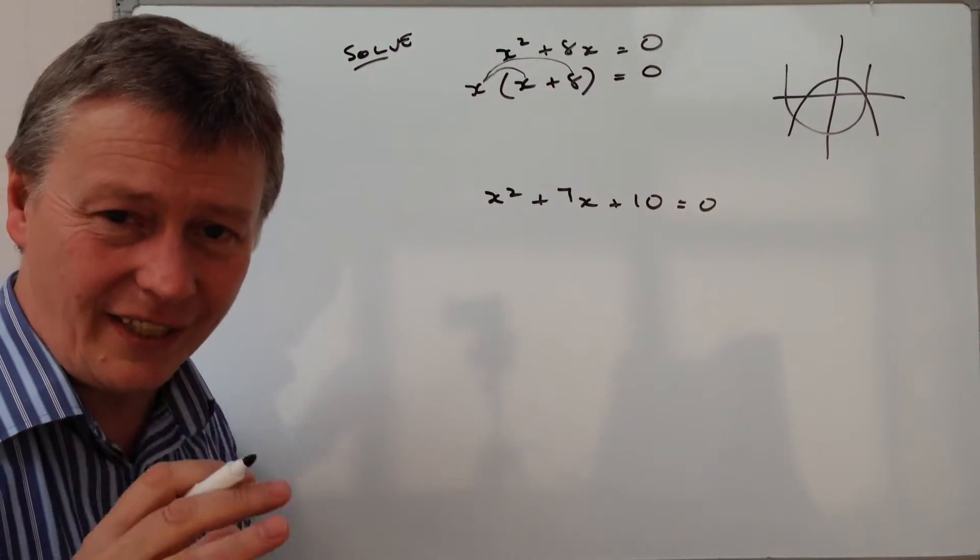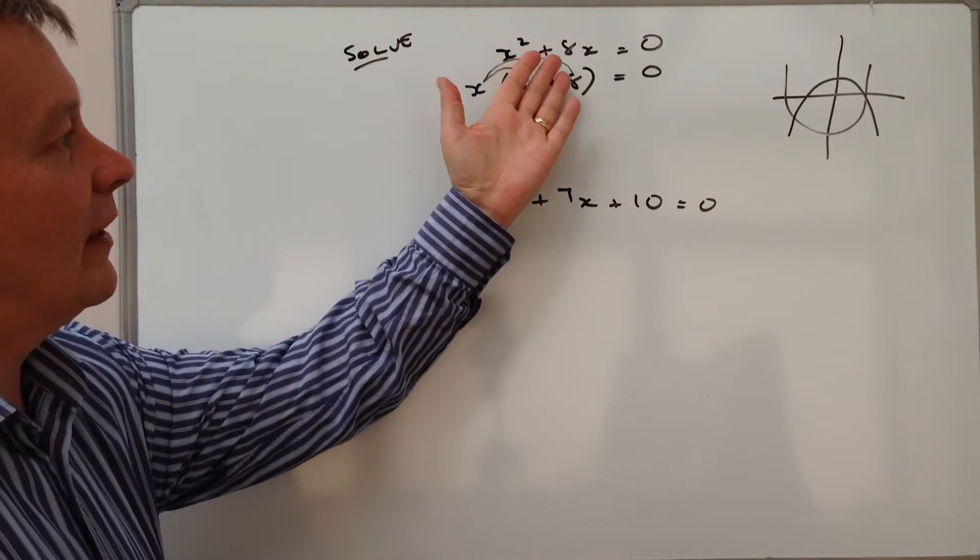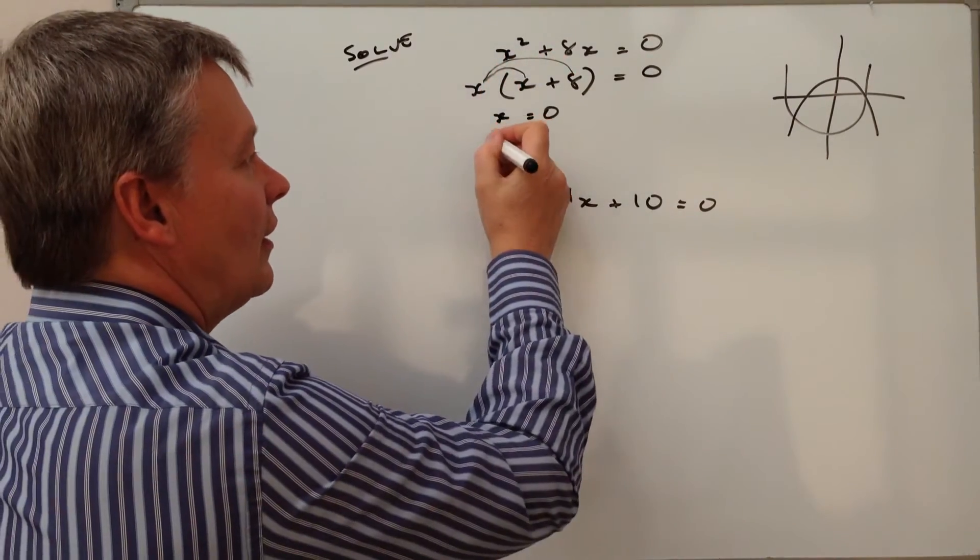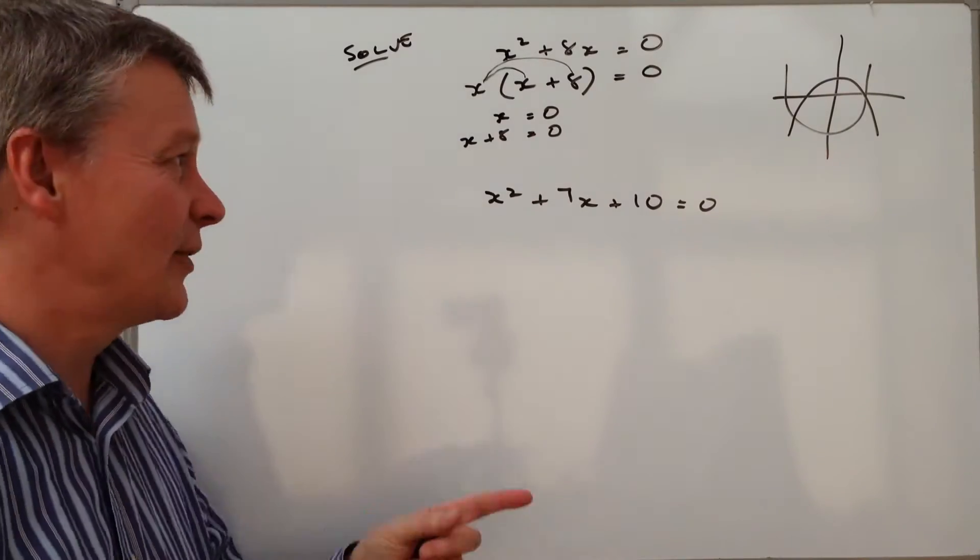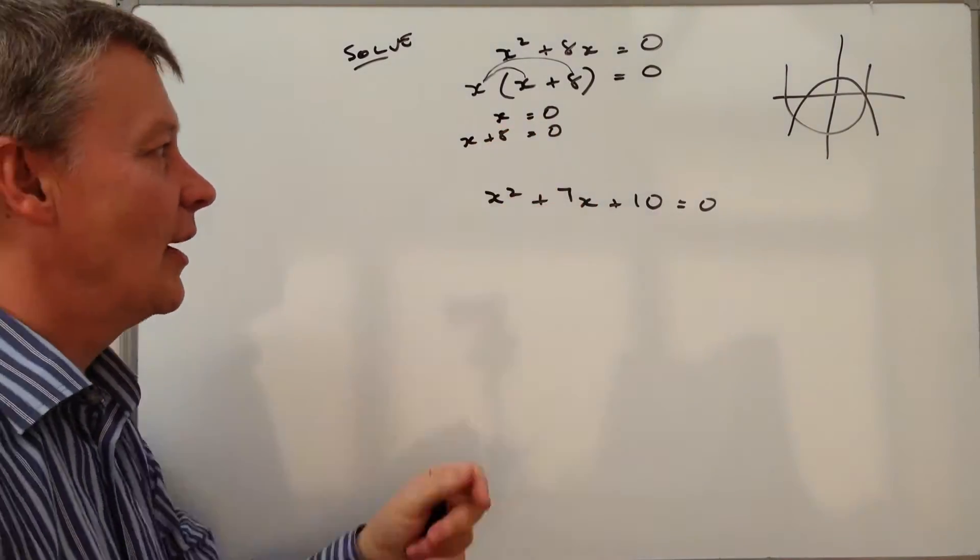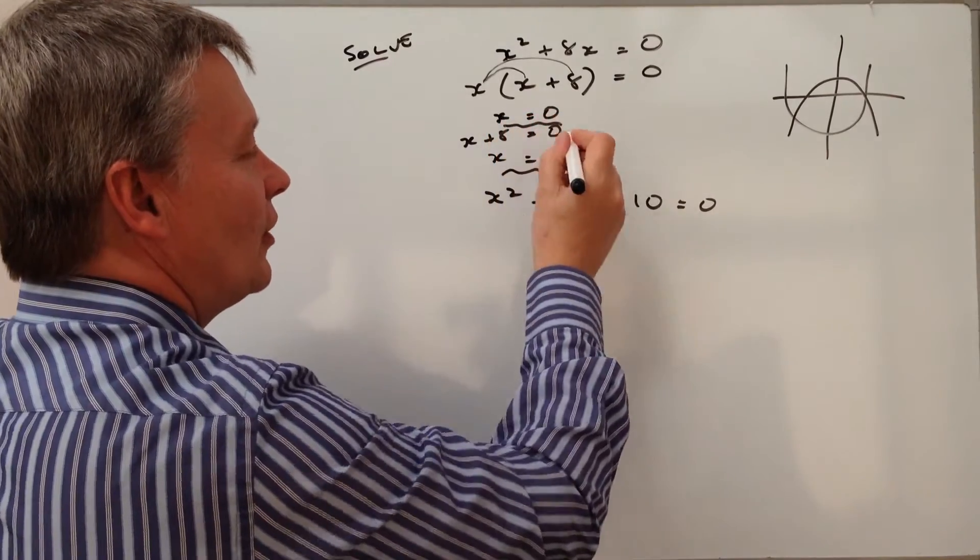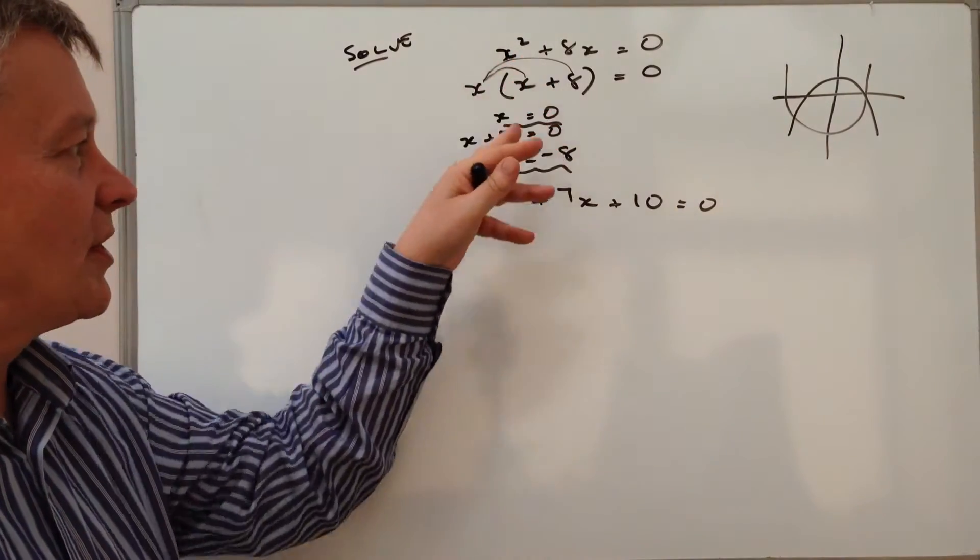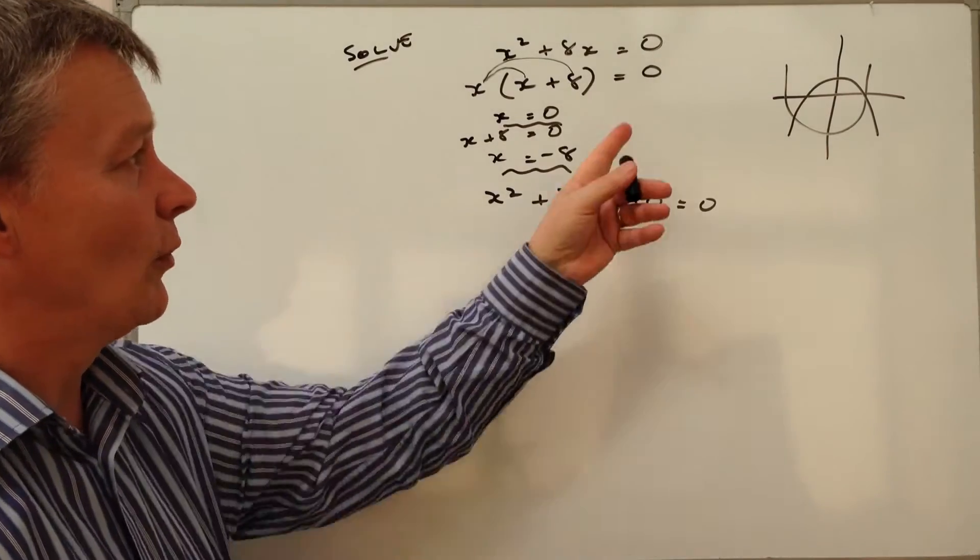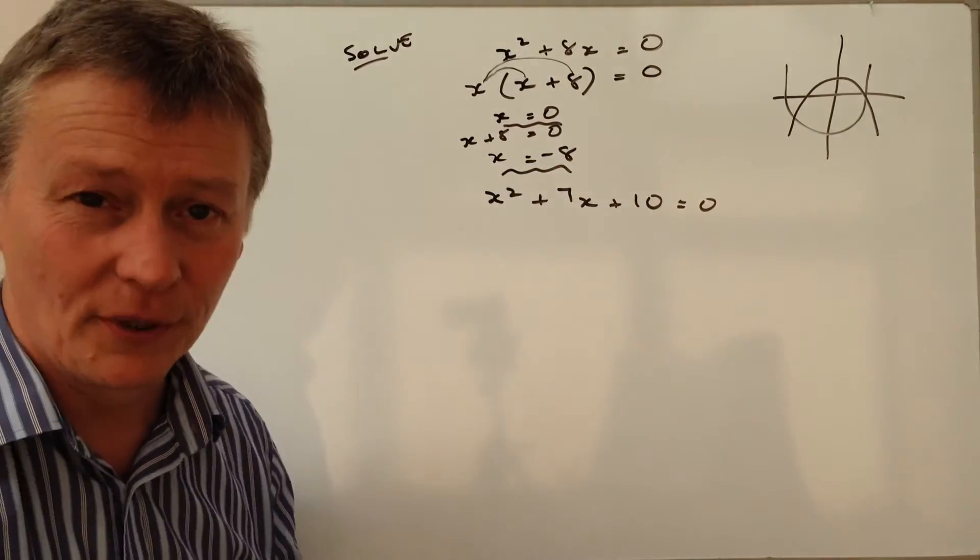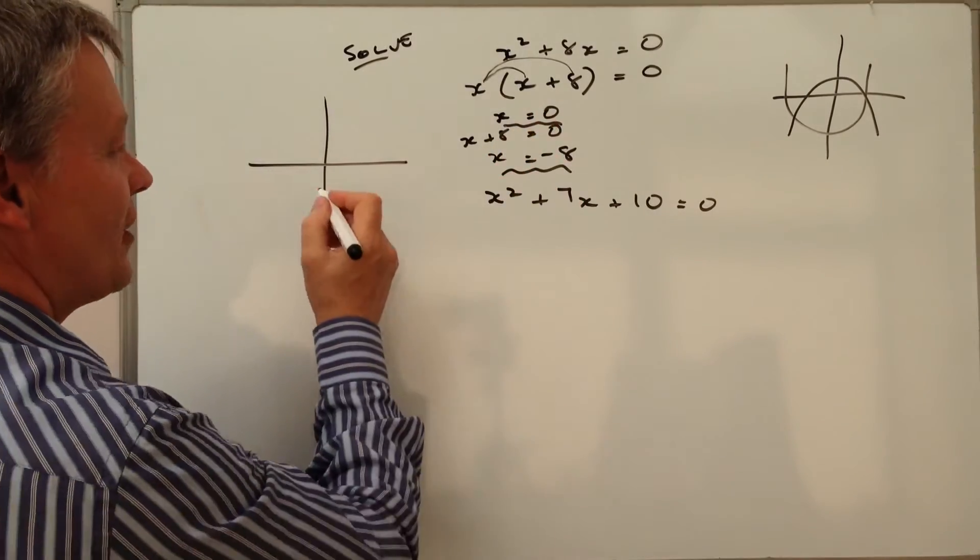I've got two solutions to this particular equation. I've got x equals zero, which is the first bit of it, and I've also got x plus eight equals zero. If x plus eight equals zero, then if I minus eight from both sides, I get the second solve, which is x equals minus eight. So I've got two values of x on this quadratic: zero and x equals minus eight.